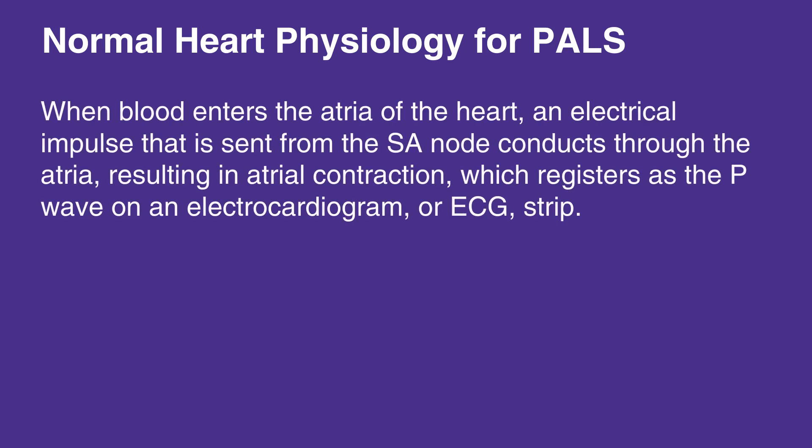When blood enters the atria of the heart, an electrical impulse sent from the SA node conducts through the atria, resulting in atrial contraction, which registers as the P wave on electrocardiogram, or ECG strip.